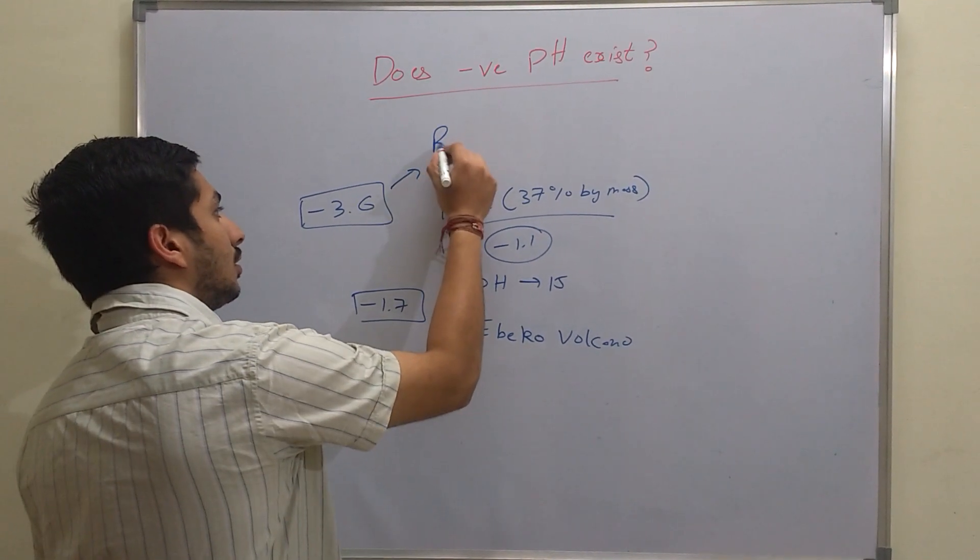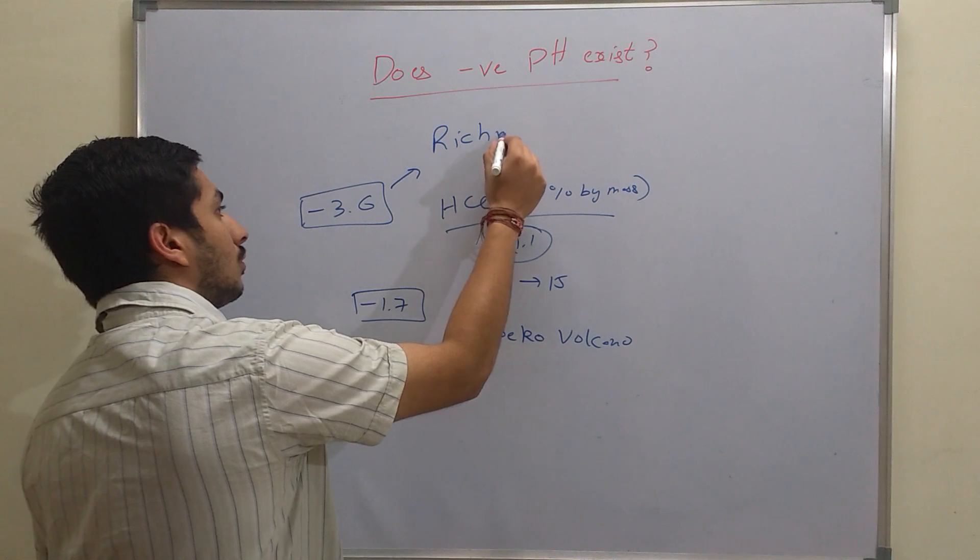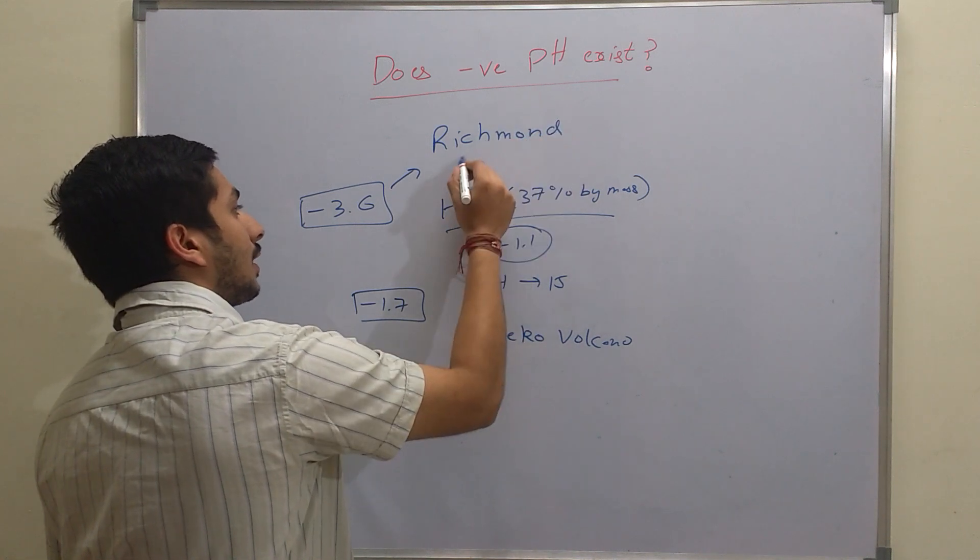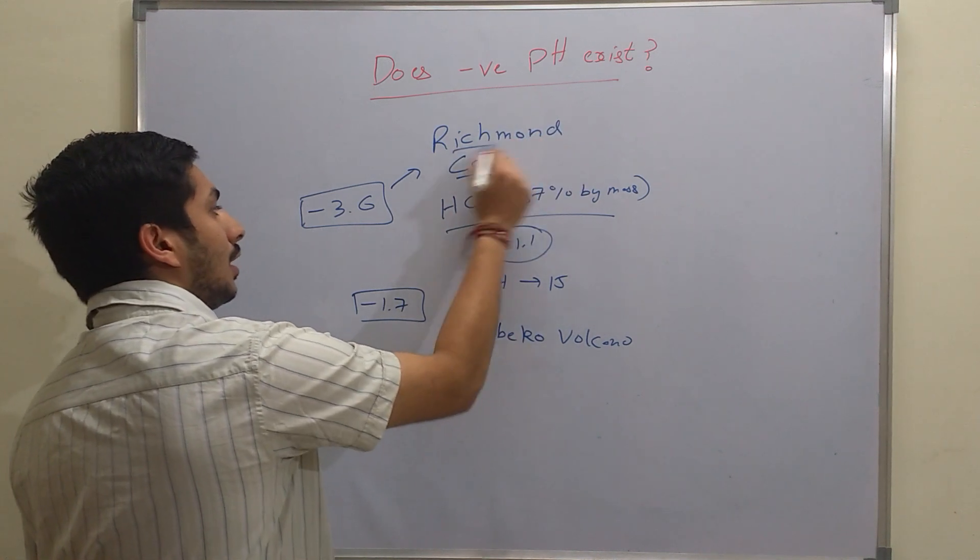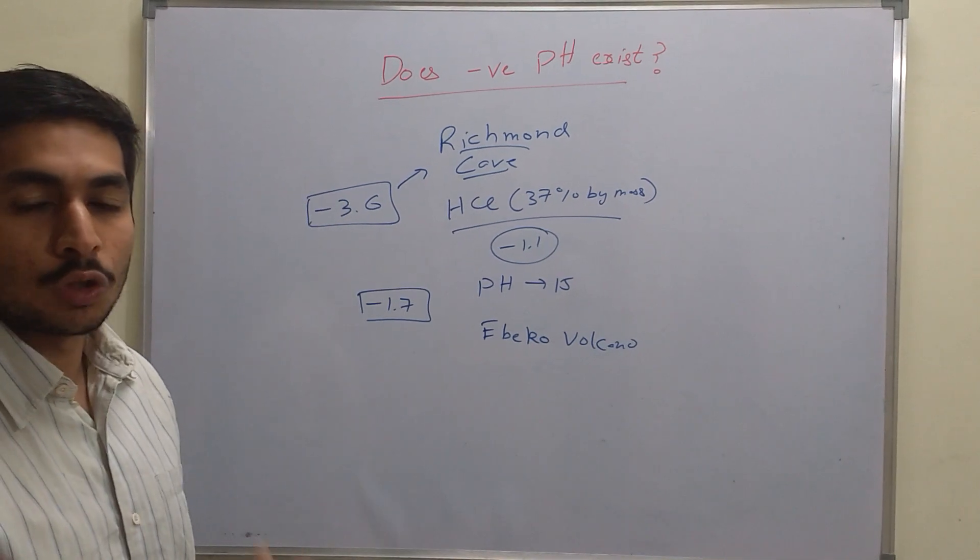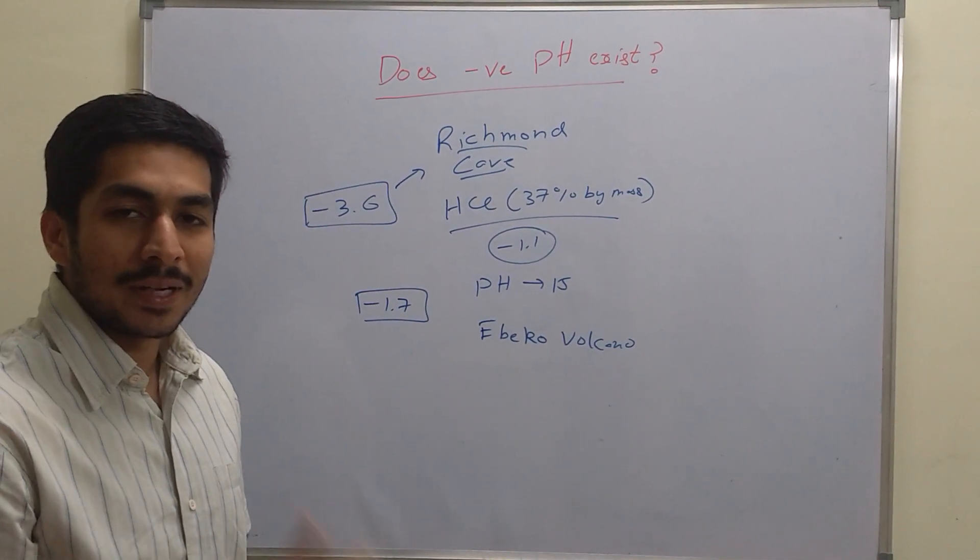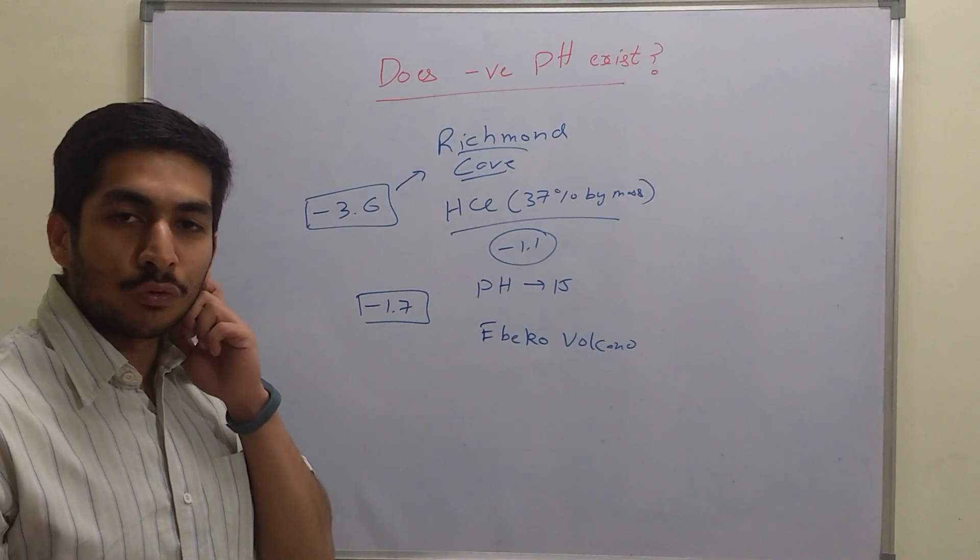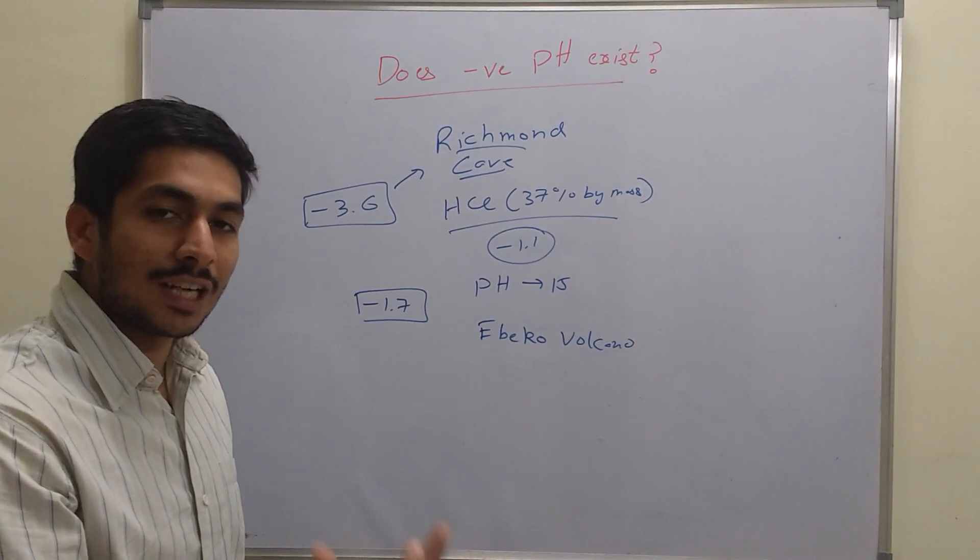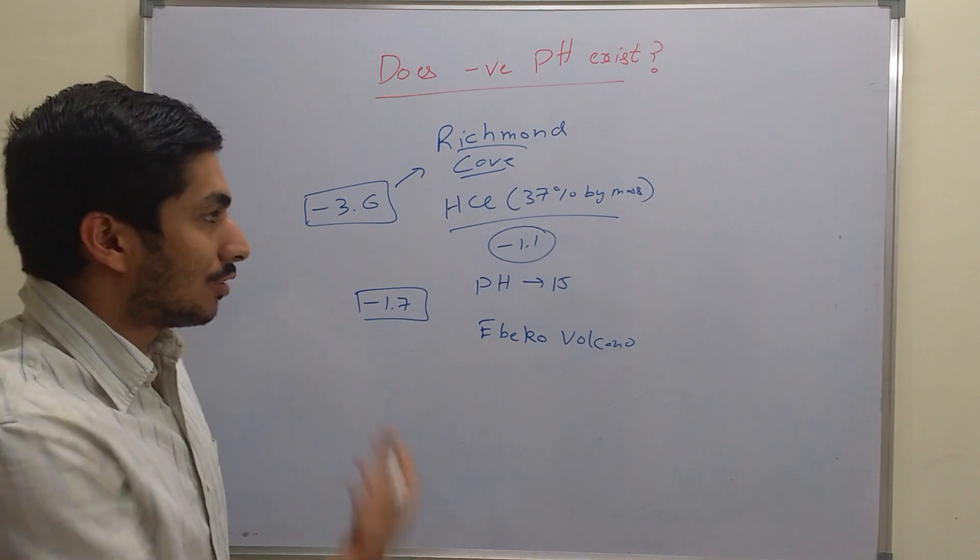These have been found in waters in Richmond cave in California, USA. There the pH has been found to be as low as minus 3.6. So it is very common to have pH beyond the range of 0 to 14 - it can be more than 14, it can be less than 0.